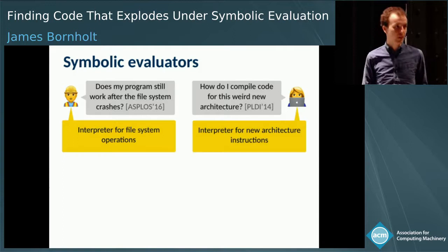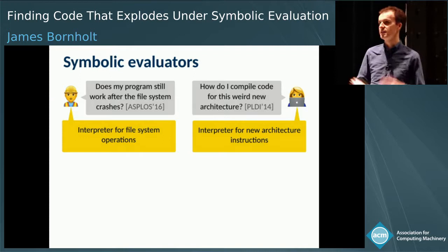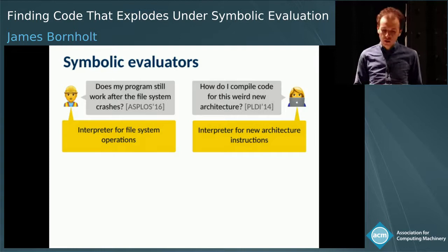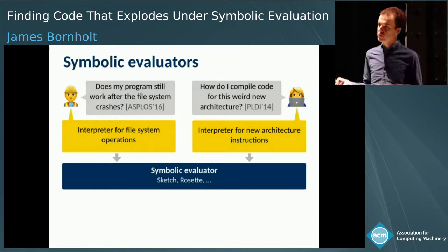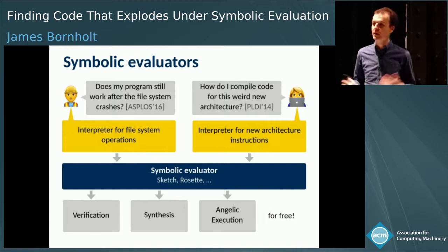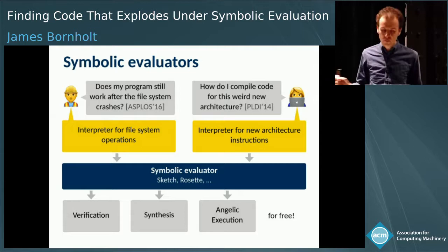To build an automated tool using symbolic evaluation, you first write an interpreter for the language that you care about — maybe an interpreter for file system operations or for the instructions in your new architecture. Then you provide this interpreter to a symbolic evaluator. These are frameworks like Sketch and Rosette, which can take that interpreter as input and automatically give you back powerful automated reasoning tools: verifiers, synthesizers, debuggers, and that kind of thing.